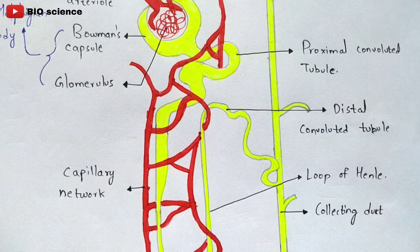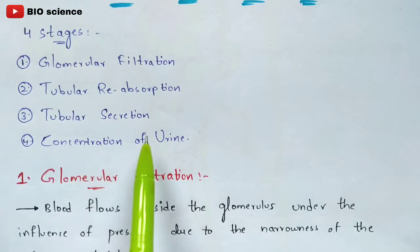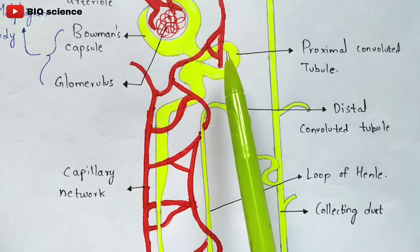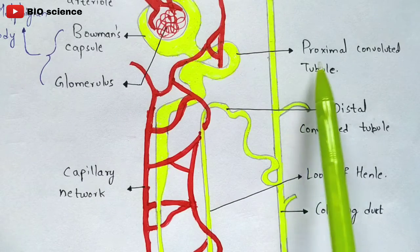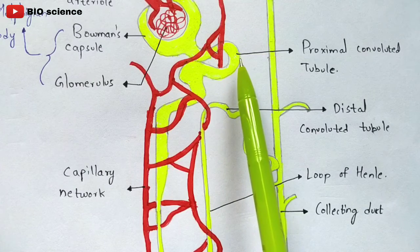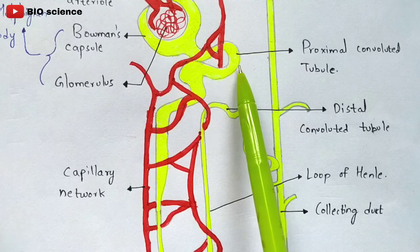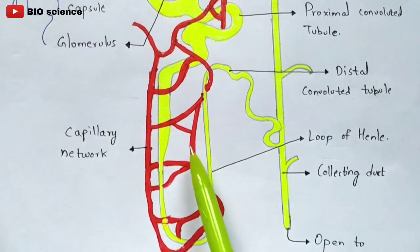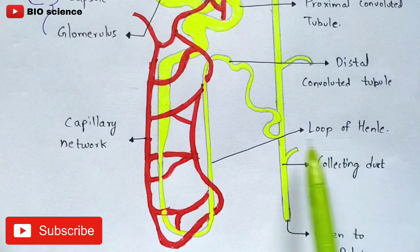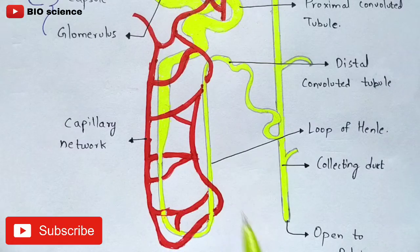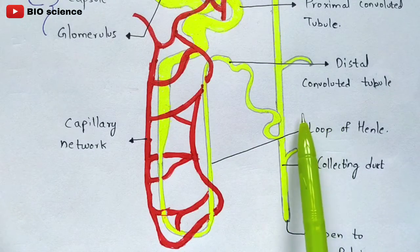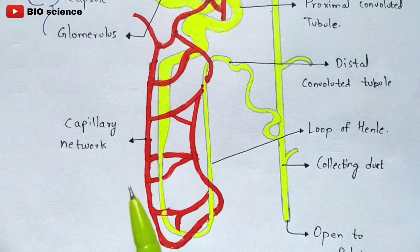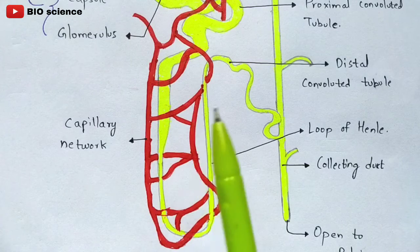Now we discuss the third stage called tubular secretion. The primary urine enters the proximal convoluted tubule where tubular reabsorption occurs. After that, the urine enters into the loop of Henle — the U-shaped structure — and then into the distal convoluted tubule. The functioning in the loop of Henle as well as the distal convoluted tubule is similar, with both reabsorption and secretion occurring there.